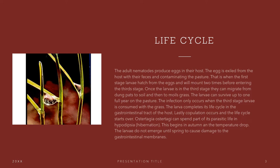Ostertagia ostertagii can spend part of its parasitic life in hypobiosis, meaning hibernation. This begins in autumn at the temperature drop. The larvae do not emerge until spring to cause damage to the gastrointestinal membranes.